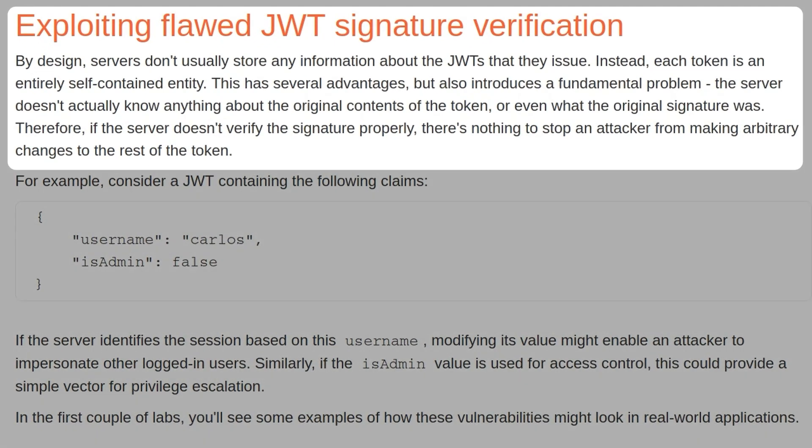By design, servers don't usually store any information about the JWTs that they issue. Instead, each token is an entirely self-contained entity. This has several advantages, but also introduces a fundamental problem: the server doesn't actually know anything about the original contents of the token, or even what the original signature was. Therefore, if the server doesn't verify the signature properly, there's nothing to stop an attacker from making arbitrary changes to the rest of the token.